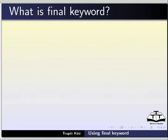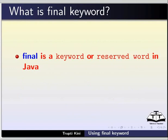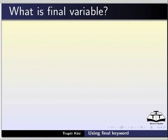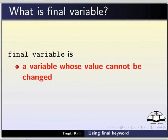First of all, we will learn what the final keyword is. Final is a keyword or reserved word in Java. It can be applied to variables, methods, or classes. A final variable is a variable whose value cannot be changed — that is, it will be a constant.